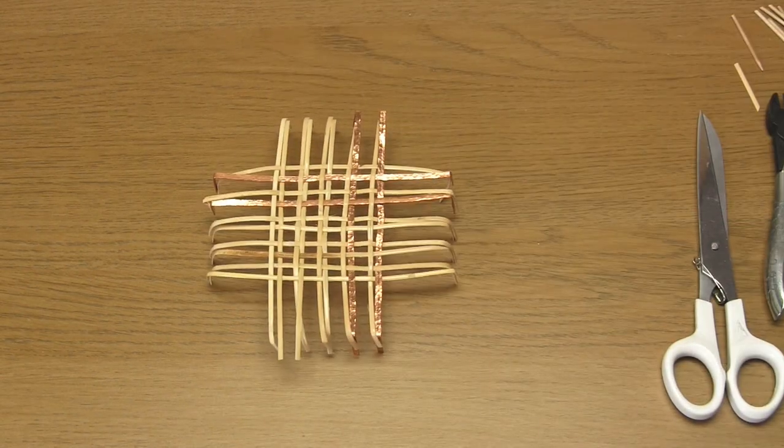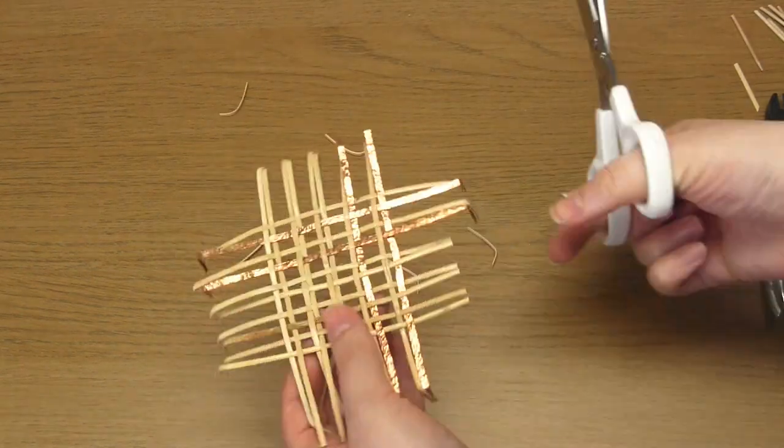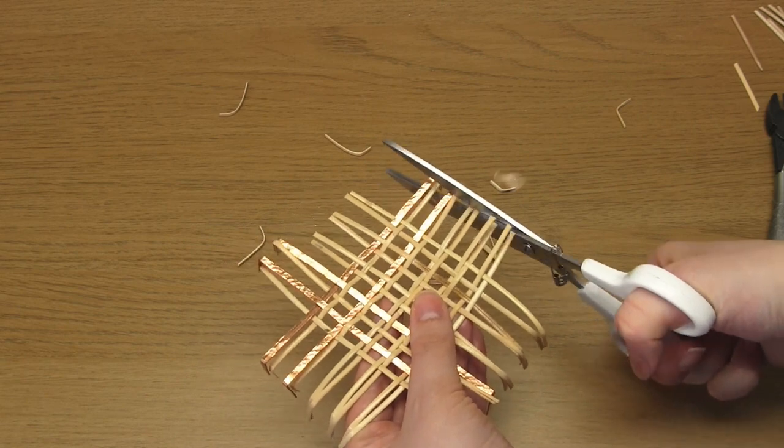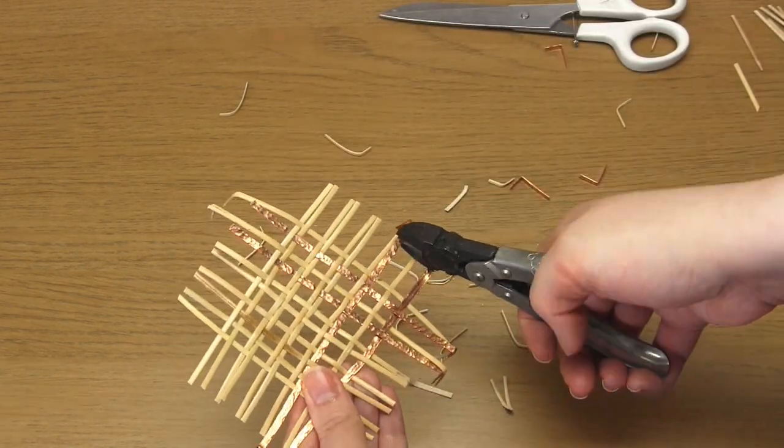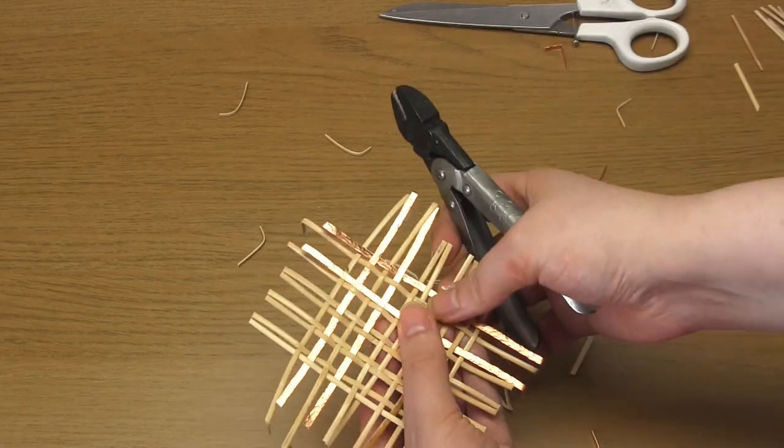Then remove the weaving from the frame and cut off the excess copper and cane. Try and make it as symmetrical as possible.